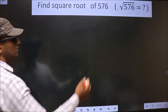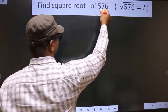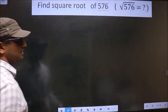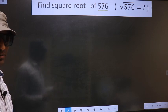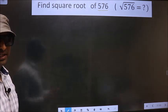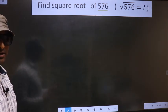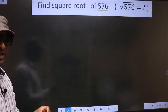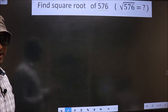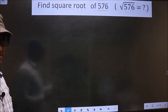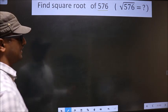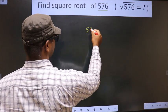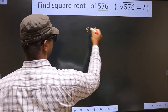Find the square root of 576. To find the square root by long division method, first we have to frame it in this way. That is 576.